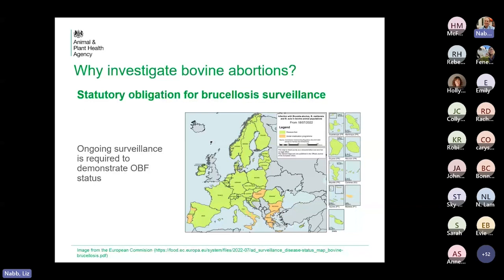Just to clarify what we mean by brucellosis — the notifiable Brucella species are Brucella abortus, which is the one we're primarily testing for in cattle. There's also Brucella ovis, Brucella melitensis in sheep and goats, and Brucella suis as well. There's been a lot in the press about Brucella canis — that is reportable, but it's not treated in the same way as these ones that we're interested in here.